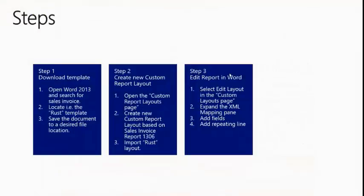Step number 3: edit the template in Word. We will select Edit Layout in the Custom Report Layout page, then insert content controls — for example the company address and line items. We will expand the XML Mapping pane found in the Developer tab. In a previous video I explained how to enable the Developer tab. To add a field, right-click and select Insert Content Control, then choose Plain Text. For the line table, right-click and select Insert Content Control, then choose Repeating.